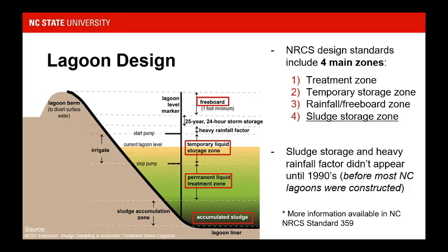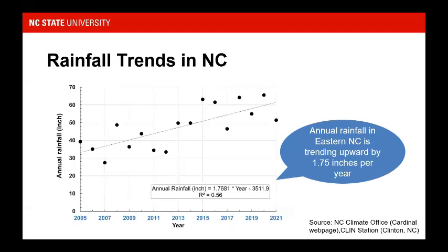A lot of North Carolina swine lagoons were built prior to the sludge storage zone being a required component. Because of that, many lagoons are taking up more than their fair share of treatment volume, and the solids are also taking up room that would otherwise be available for freeboard and rainfall storage. We're also seeing increasing rainfall trends in eastern North Carolina — from Clinton, NC, a steady increase of almost one and three-quarter inches per year over the past 15 years, plus more frequent hurricanes and large storm events.